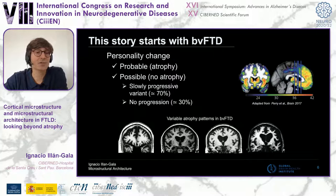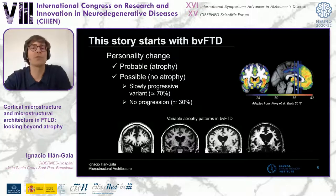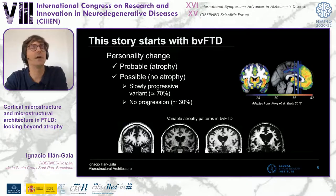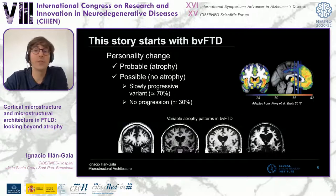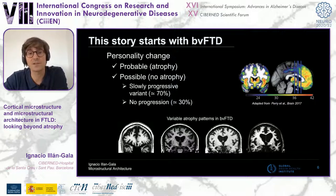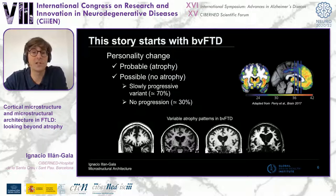I started with the most common clinical presentation of FTLD: the behavioral variant of frontotemporal dementia, or bvFTD. This is a fascinating syndrome where patients show progressive change in personality with relative preservation of cognitive function. bvFTD is a very heterogeneous clinical syndrome, and in accordance with this, the pattern of cortical atrophy is also very heterogeneous. Up to a third of patients do not show the typical pattern of atrophy at baseline MRI.